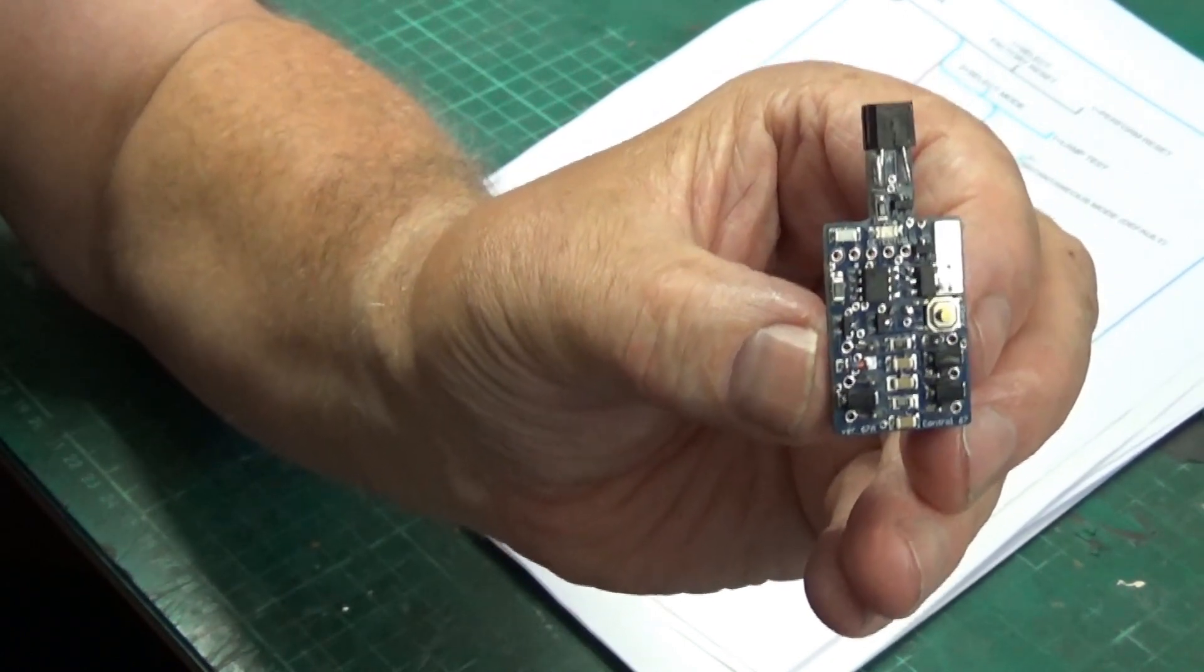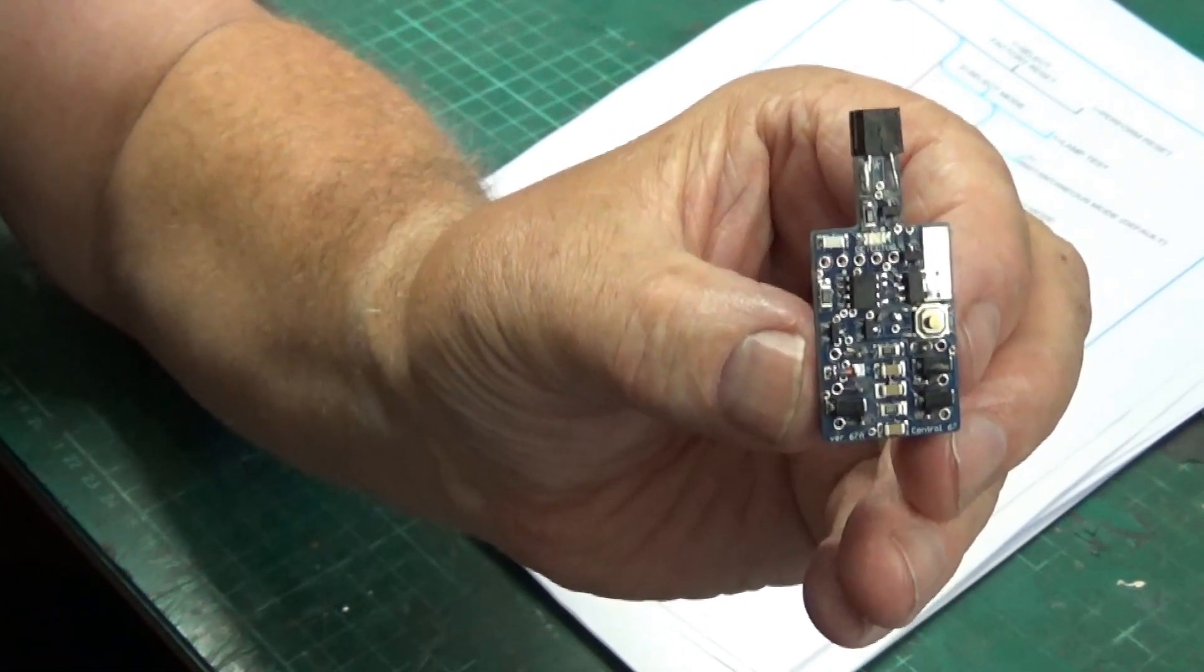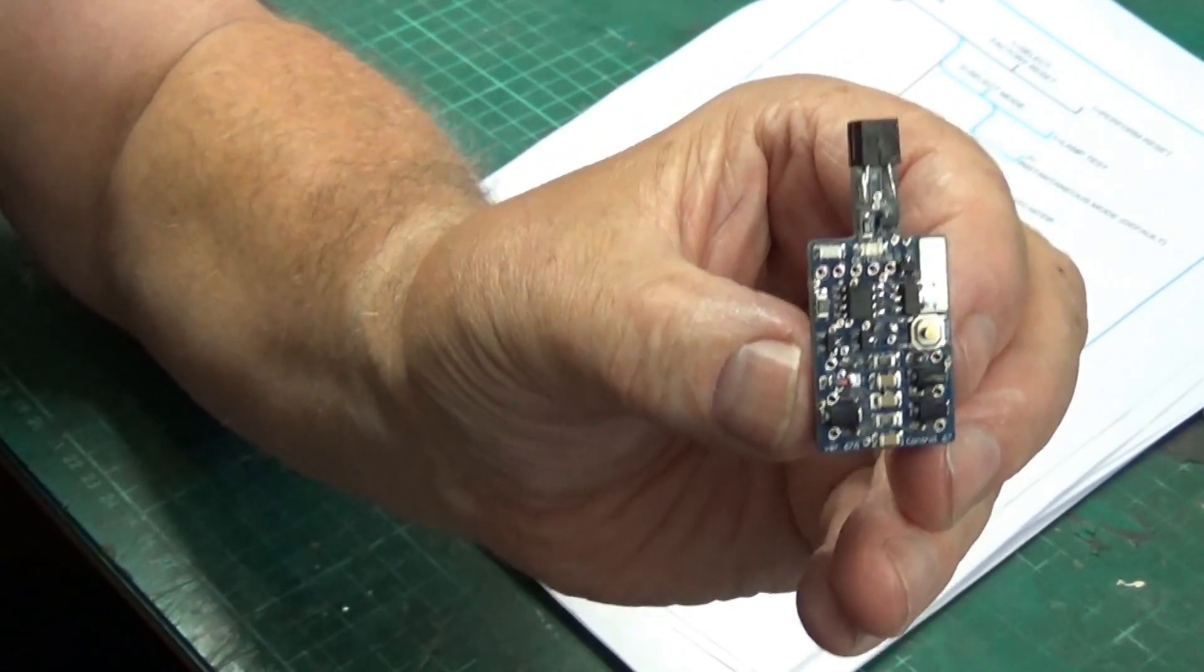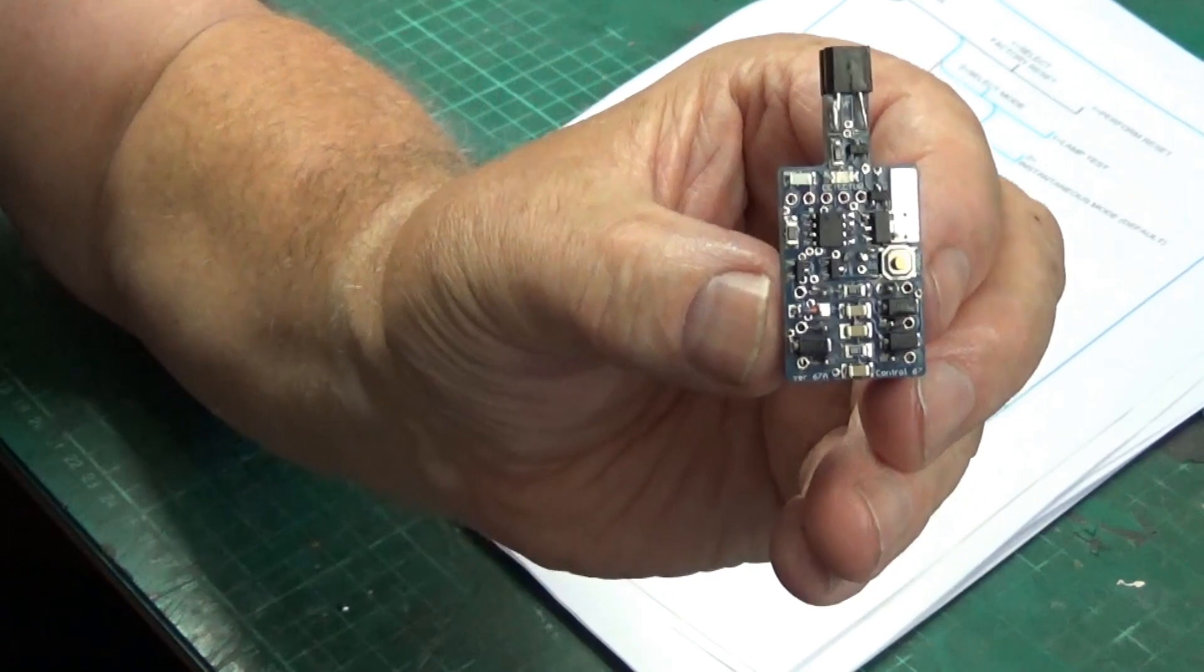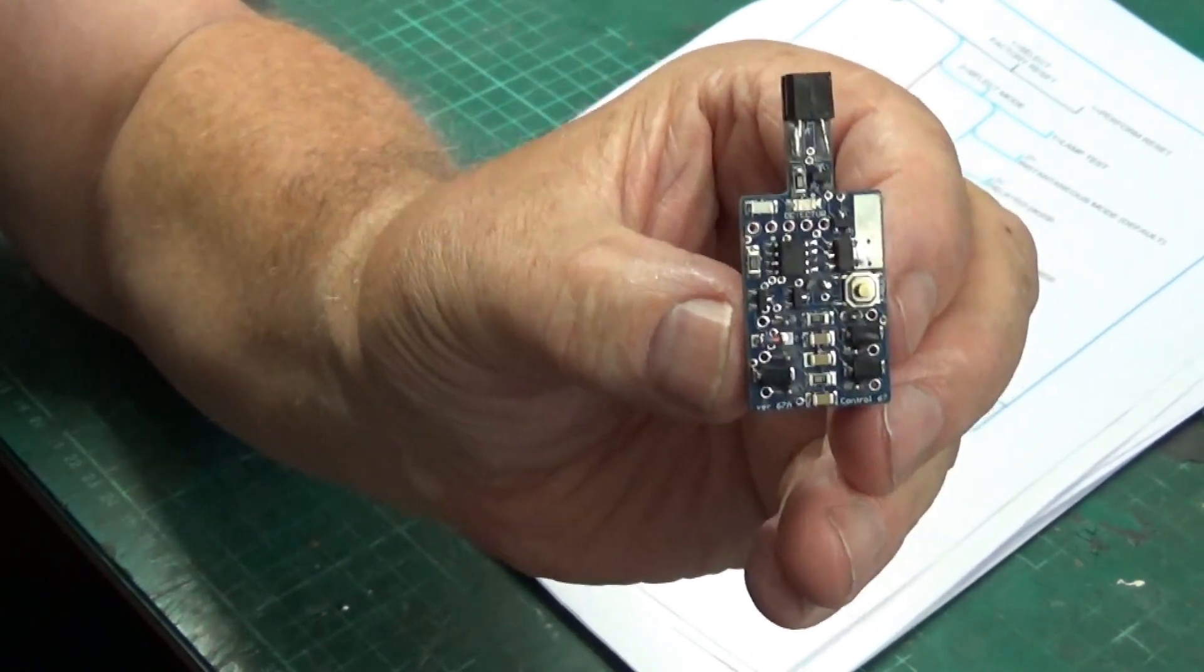When you've reached the certain amount of LEDs that you need for the program that you want, you simply release the button and that's it. That's the module programmed for that program that you've chosen.